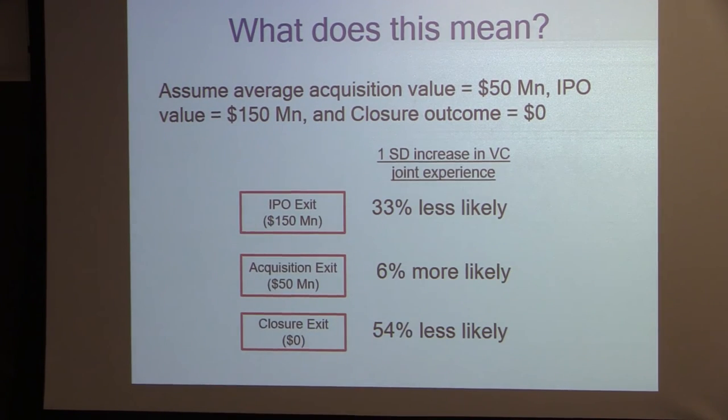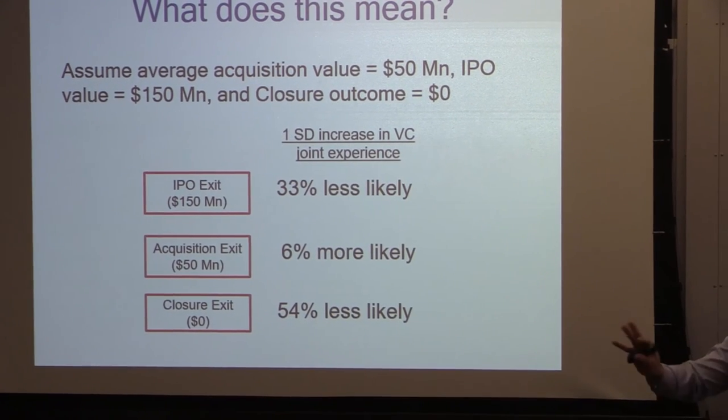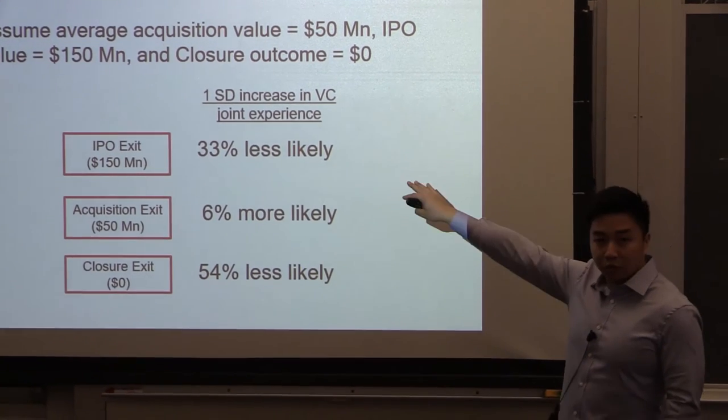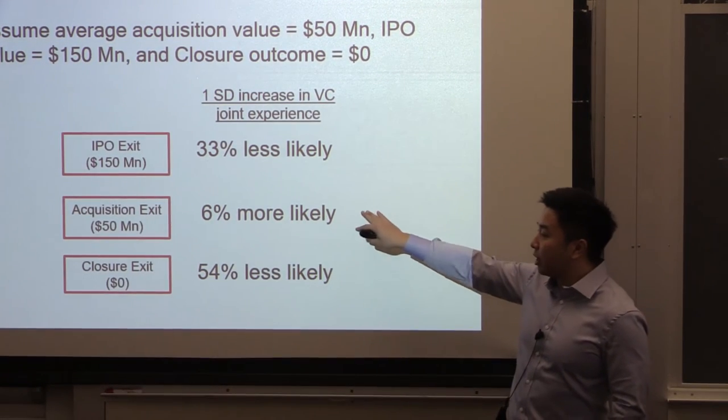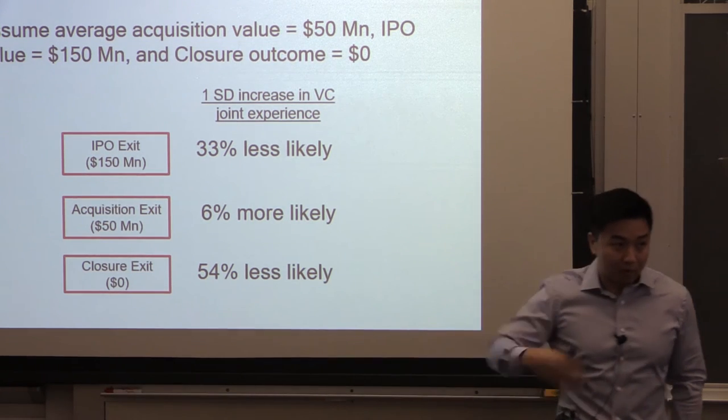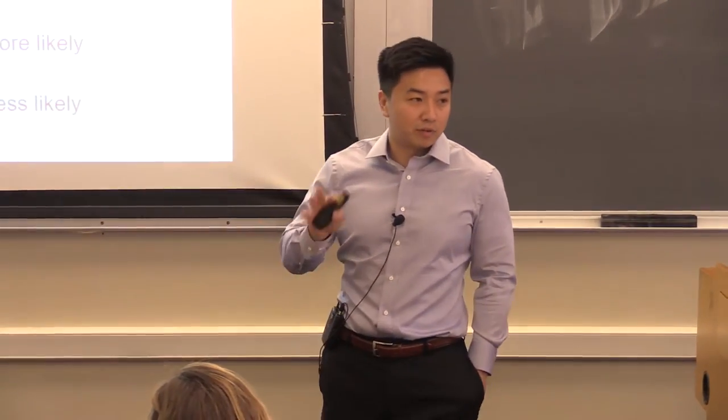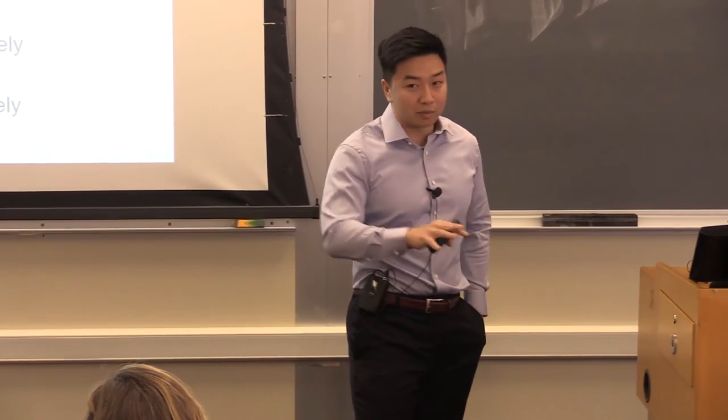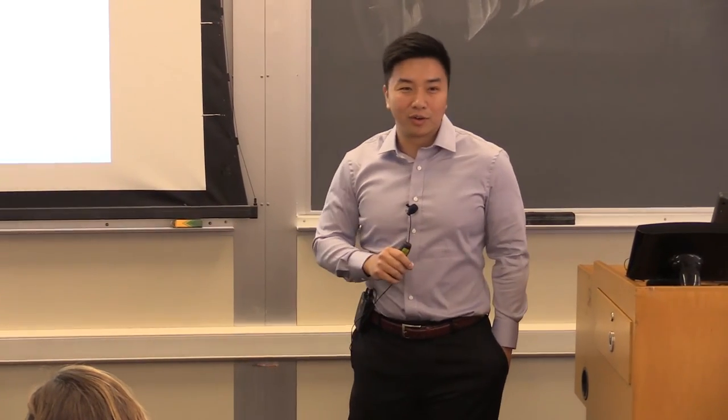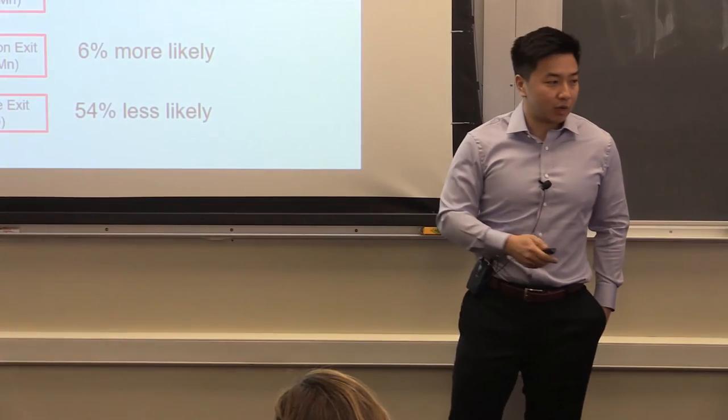This risk-reward thing is appearing again. Just to quantify this: if you have a one standard deviation increase in this VC joint experience measure that we came up with, assuming the average IPO exit is worth about $150 million, you're 33% less likely to reach for an IPO exit, 6% more likely to go for an acquisition exit, and 54% less likely to go bankrupt or experience a closure. I've learned a long time ago never to do arithmetic in front of a group of finance and economics professionals, so I'll let you do the weighted average using your own assumptions. But trust me, it does help to quantify these trade-offs in terms of these values.